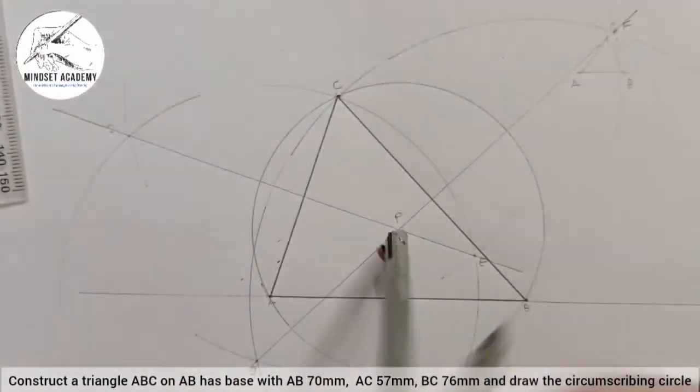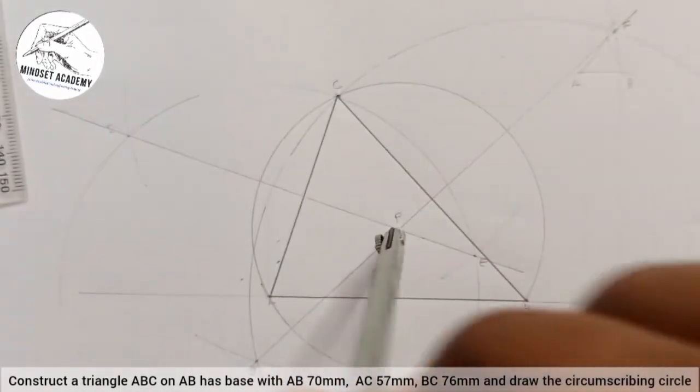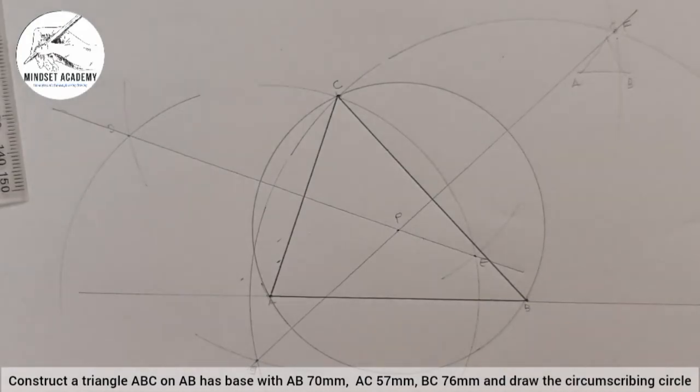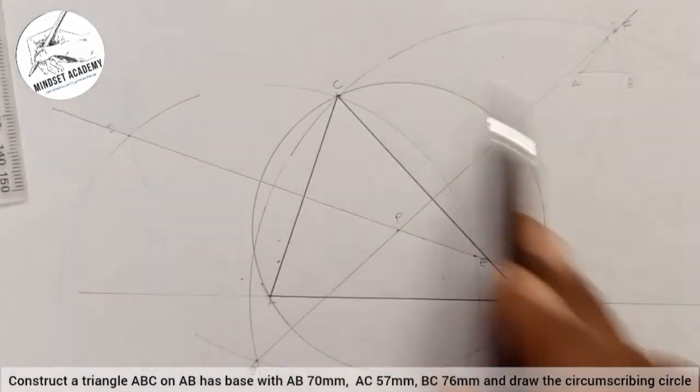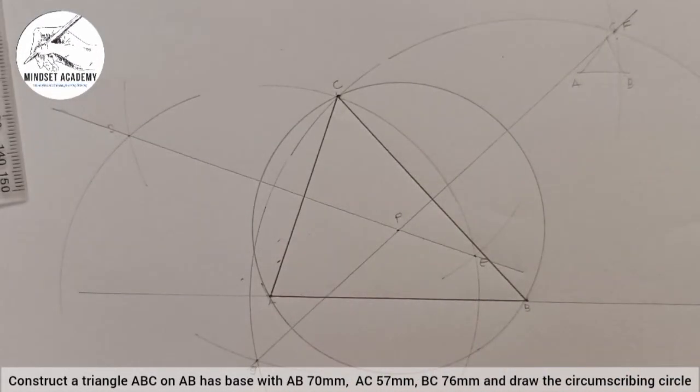This is what I am doing. It is called a circumscribing circle. So the key word here is the circle must touch the three points of the triangle. Just like in inscribing, the circle is touching the three sides. In circumscribing, the circle is touching the three points of the triangle.